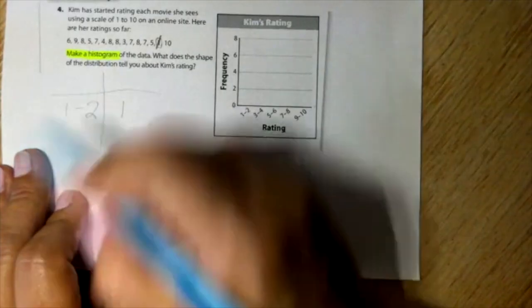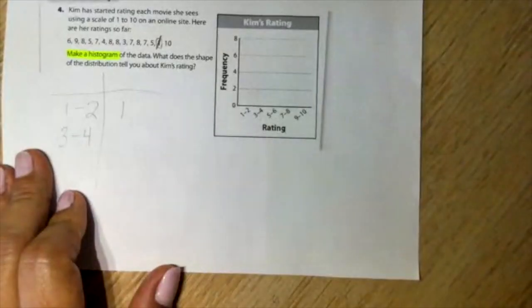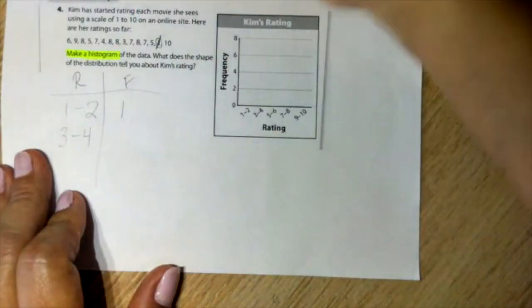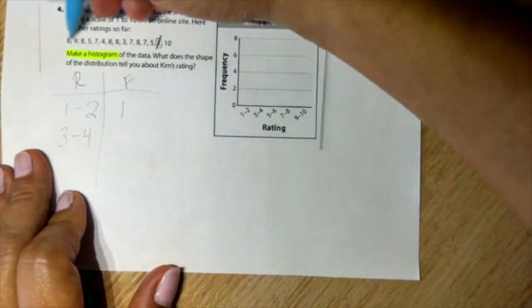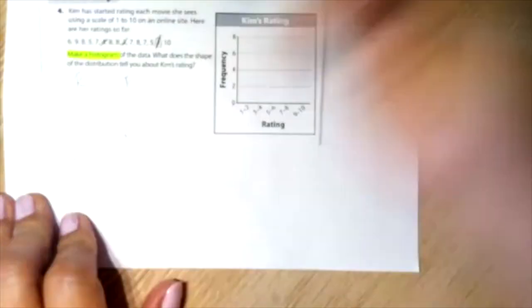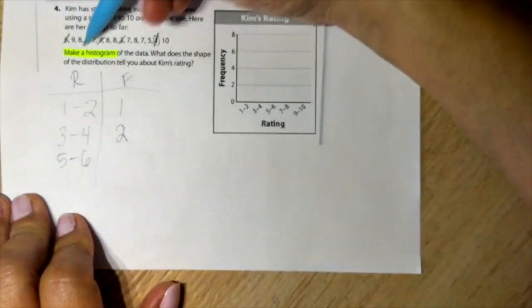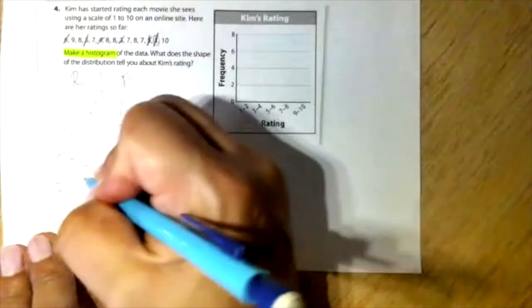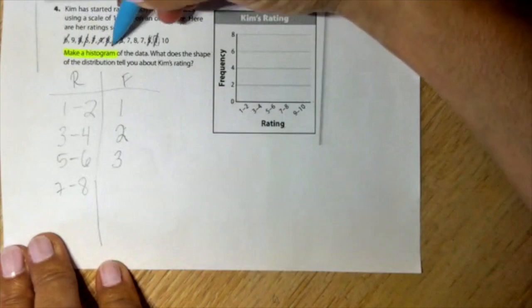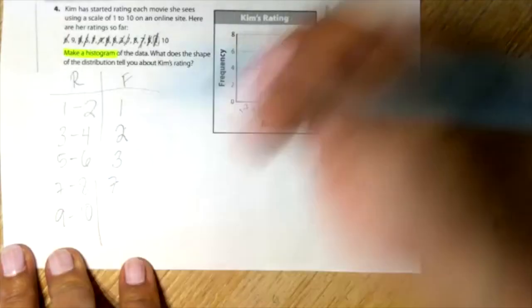So from 1 to 2, I only have one. From 3 to 4, we have one, two. Then we have 5 to 6, one, two, three. Seven to eight, one, two, three, four, five, six, seven. Nine to 10, one, two.